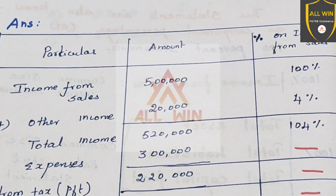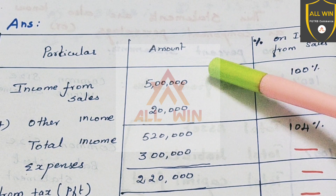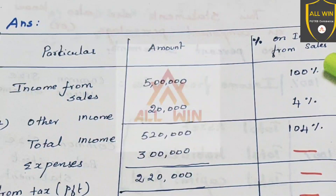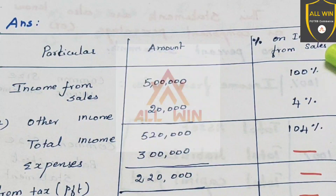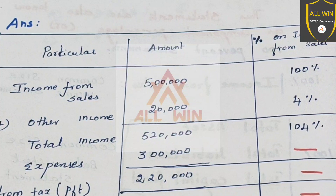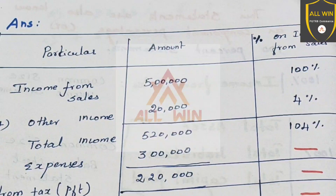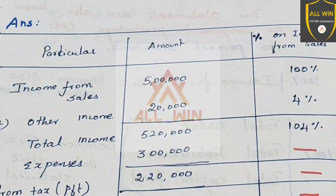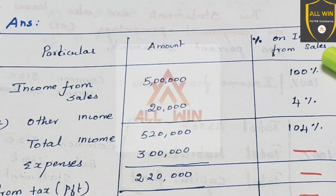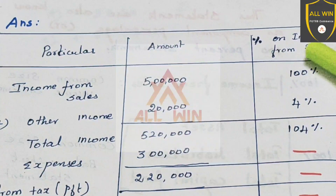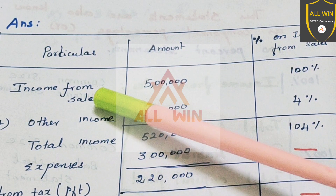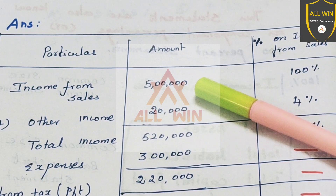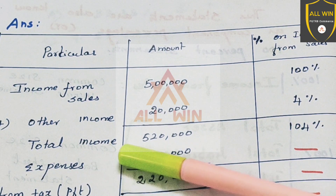You can get the amount as a percentage on income from sale. This is the common size income statement. If you want to use income from sale as the base, income from sale is 5 lakhs.